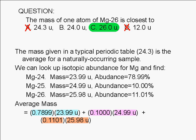If we did this, we come up with the number that is typically shown on a periodic table: 24.3 atomic mass units or 24.3 Daltons.